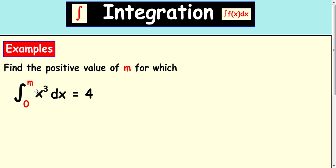We need to be told what the answer to the integration comes to. So in this case, the integral between 0 and m of x³ dx with respect to x is equal to 4.